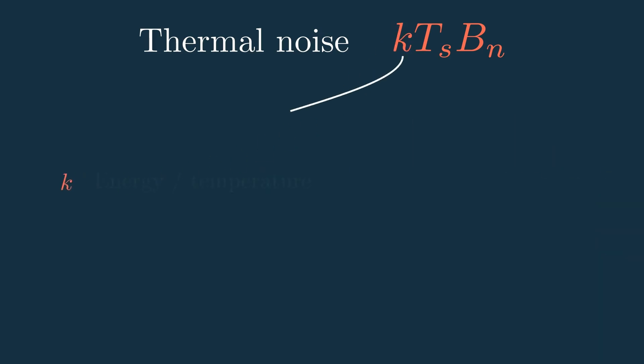So you get it in terms of energy per temperature, or in units of joules per kelvin. Since it's a constant, this value will always be about 1.38 times 10 to the negative 23rd.